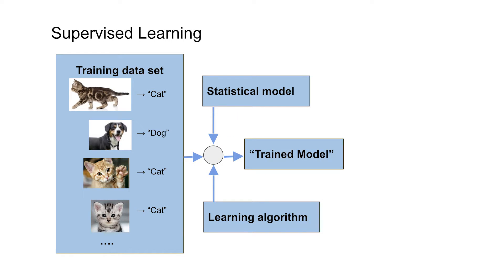So how does supervised learning actually work? In supervised learning, we're given a training dataset. For example, we take images and map them to a label — dog or cat — depending on what's shown in the image. Our training dataset consists of many images, each with a label. We take that training dataset, combine it with a statistical model and a learning algorithm, and through this process we train the model. The outcome is a trained model.